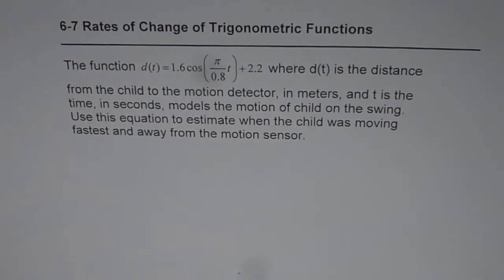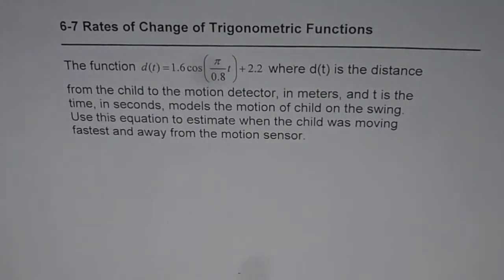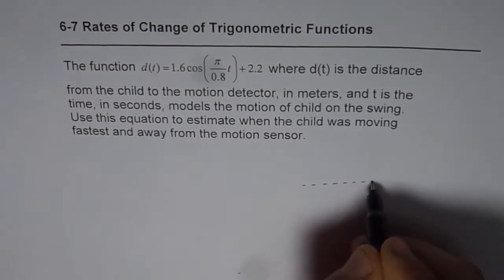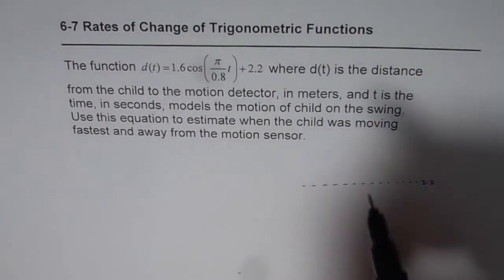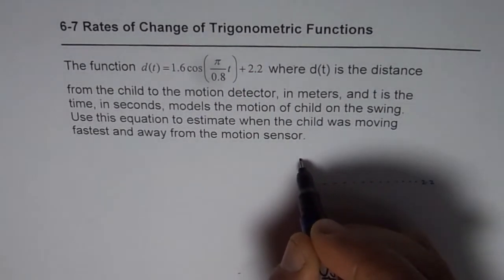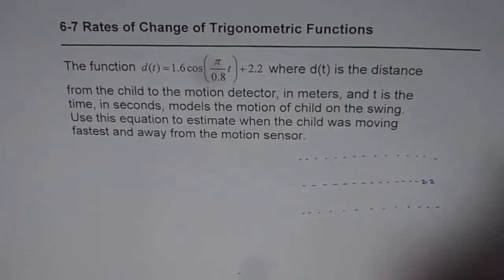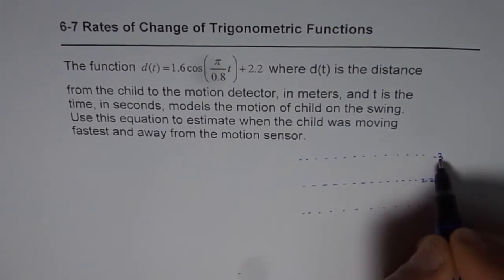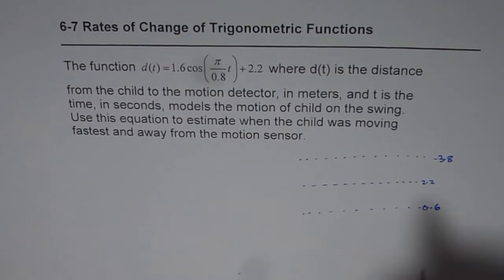Now to answer this question I'll begin with sketching the graph of d(t) itself. It says that vertically it has been moved 2.2 units up. So let me draw a line which is the axis. So this is the axis which is 2.2 y value. Now the amplitude is 1.6, that means the function will go 1.6 above this. So if I add 1.6 here I get 3.8 and if I subtract 1.6 I get 0.6.